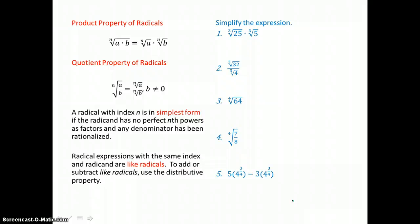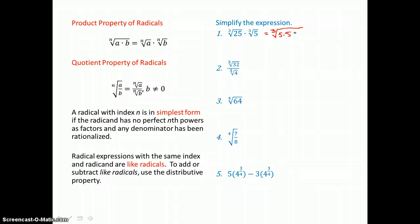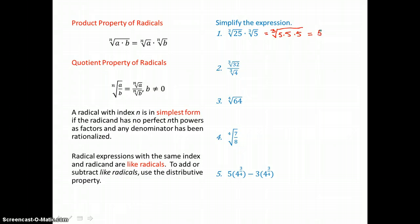Here are some more examples. In this first one, we're multiplying like radicals — cube roots. Because of our product property of radicals, I can put those radicands underneath the same cube root, and I can write 25 as 5 times 5, times that 3rd factor of 5. So I'm taking the cube root of 3 factors of 5, which means 1 will come out. The cube root of 125 is 5.